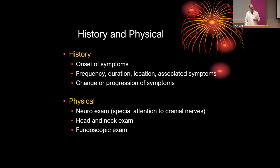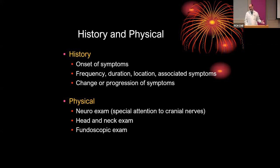On exam, you want to do a good neurologic exam with special attention to cranial nerves to evaluate for posterior fossa abnormalities. Do a good head and neck exam: palpate over the occipital nerve, the forehead, superorbital notch, and sinuses. Check for temporomandibular joint dysfunction and pericranial muscle tenderness if you suspect tension-type headaches. Probably the most important thing is a fundoscopic exam — if they have papilledema, that sends your workup in a completely different direction, and its absence helps rule out a number of secondary causes.